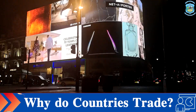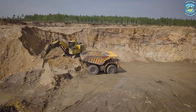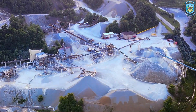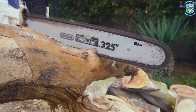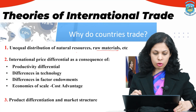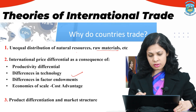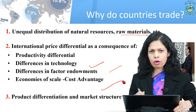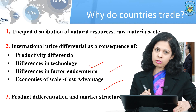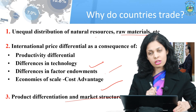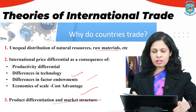The first question that comes to mind is: why do countries trade? The first and primary reason is the unequal distribution of natural resources and raw materials — mineral resources like iron and steel, or forest products. Next is the international price differential as a consequence of differences in productivity, technology, factor endowments, and cost advantage. The third reason is product differentiation and market structure, as global markets have bridged many gaps.